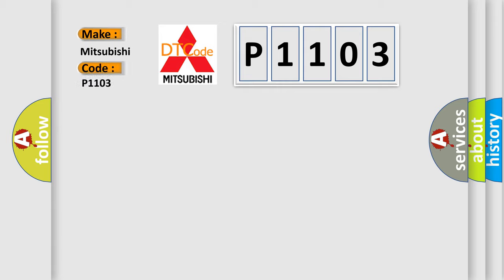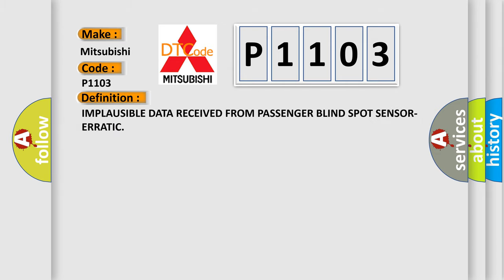What does the diagnostic trouble code P1103 mean specifically for Mitsubishi car manufacturers? The basic definition is: Implausible data received from passenger blind spot sensor, erratic.